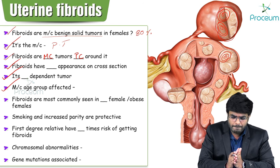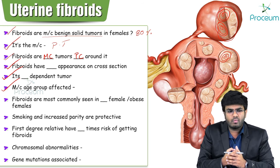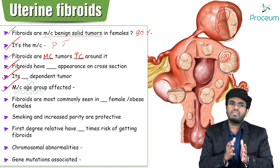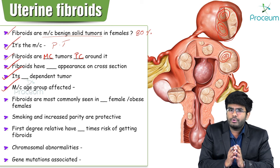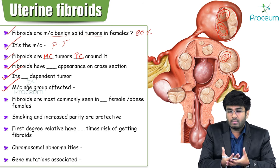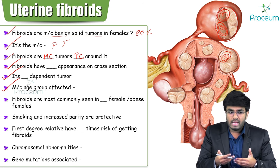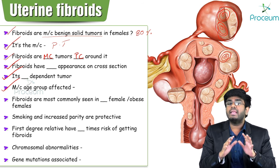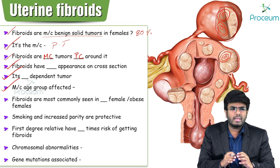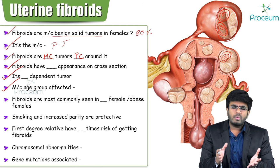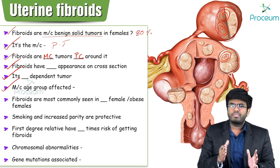Fibroids are most commonly seen in reproductive age group females. Think of it this way: the uterus is meant to grow a baby. If a female is not getting conceived — for example a nulliparous female — the uterus waits. After waiting many years, it starts making its own baby, which is the fibroid. This typically manifests around 35–40 years of age.